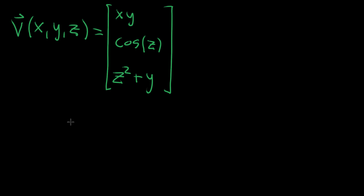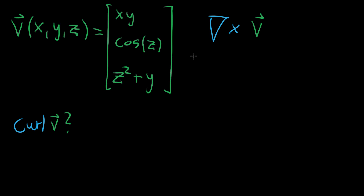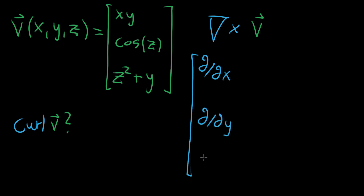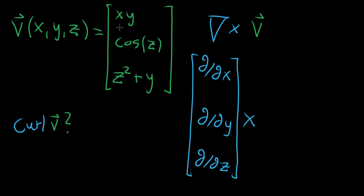So if you take this function, how do you compute the curl of that vector-valued function? As mentioned in the last video, you imagine taking the del operator and taking the cross product between that and your vector-valued function. The del operator is filled with partial differential operators: partial with respect to x, partial with respect to y, and partial with respect to z. These are just waiting to take in some kind of function, and we take the cross product between that and the function we have.